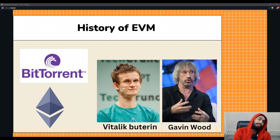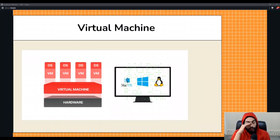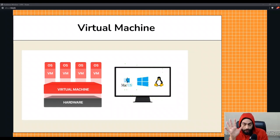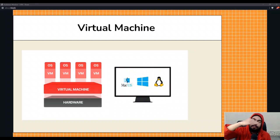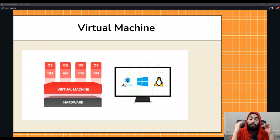Now let's move on to virtual machines. A virtual machine is a program that simulates the operation of a computer by isolating its real components and operating system. Essentially, it's an independent machine that runs on top of your computer. For example, you have a Windows OS, and a virtual machine runs as a separate independent machine on top of it with a different OS.